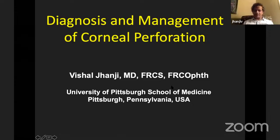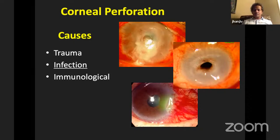Dr. Jhanji begins his talk on diagnosis and management of corneal perforations, noting there are no financial disclosures. He covers three main causes: trauma, infection, and immunological diseases. The relative prevalence depends on geography — in India most perforations were due to trauma and infection; in Hong Kong they became more immunological; in the United States, infection still tops other causes.